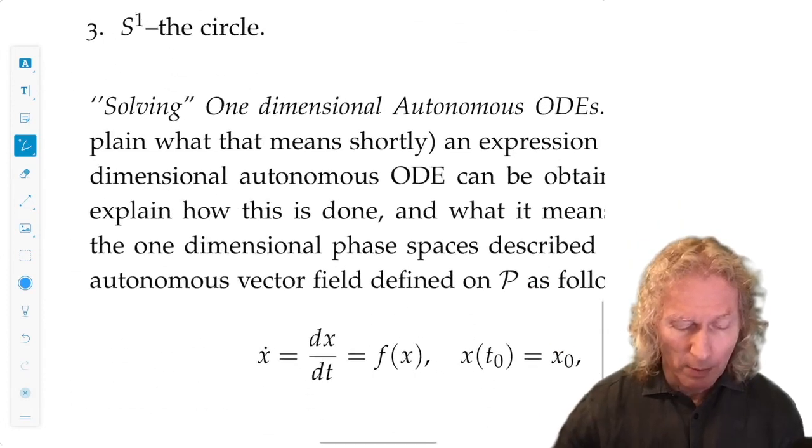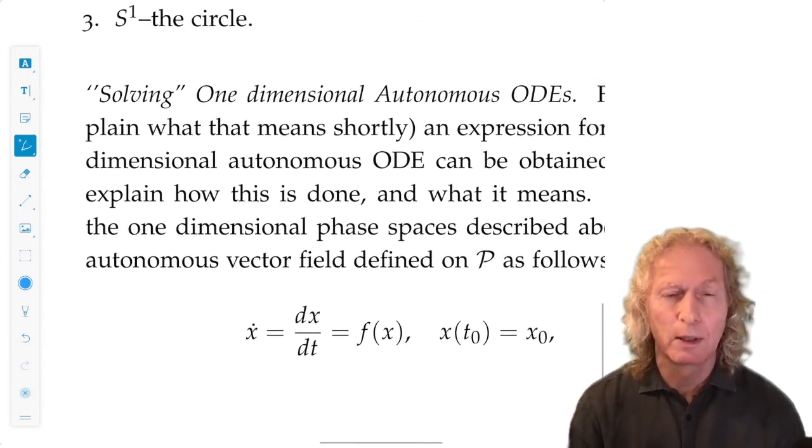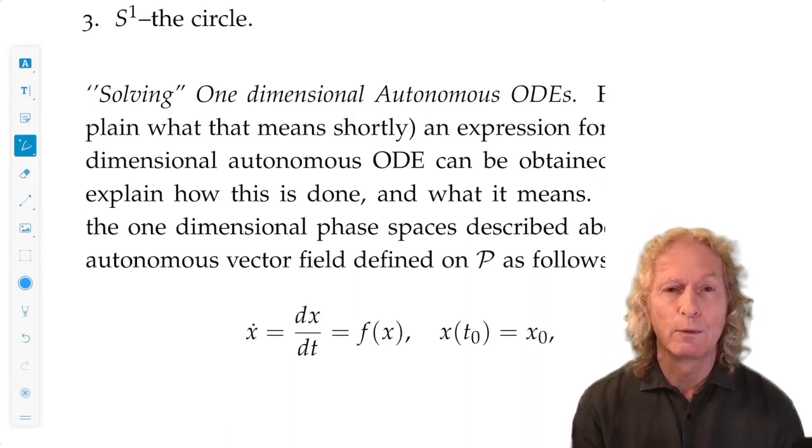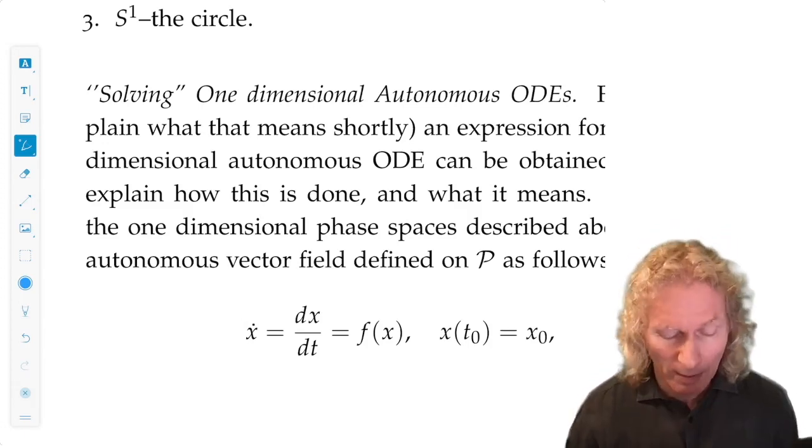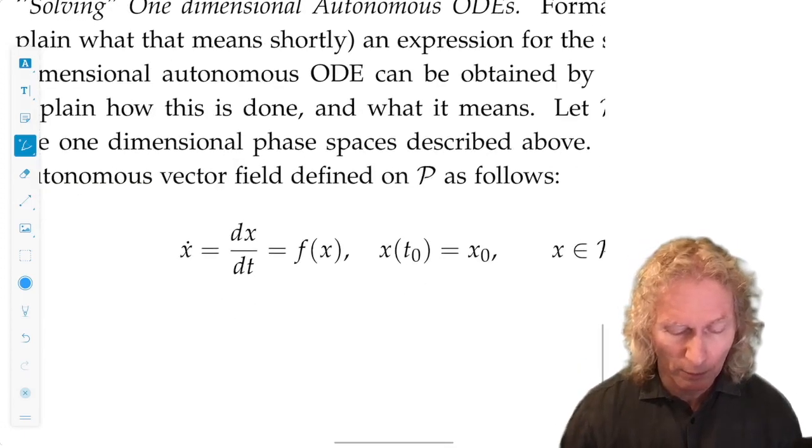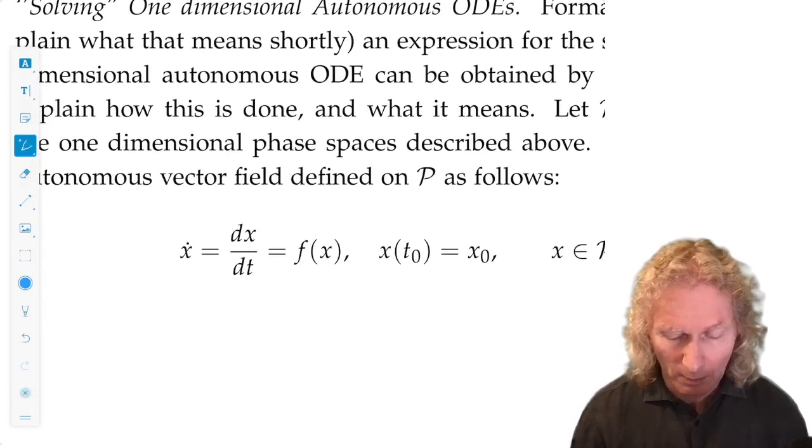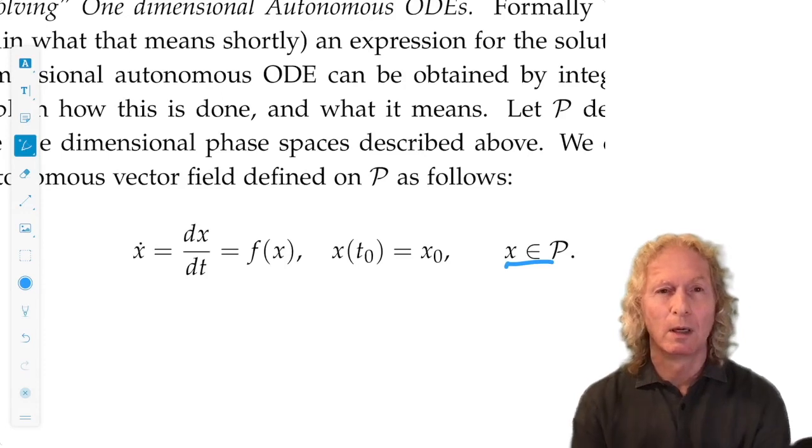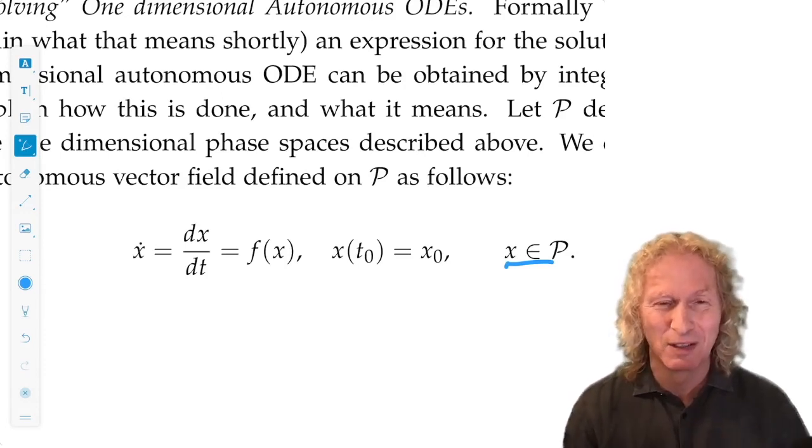I mentioned in the last lecture that we could solve every first order autonomous ODE. Here's what I mean by that. This is the general form for a first order autonomous ODE: x lives in the phase space, it could be R^1, S^1, or some subinterval of R^1.